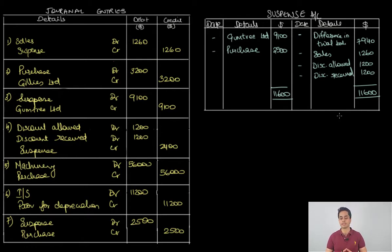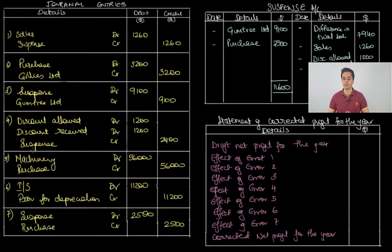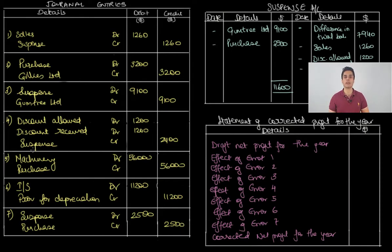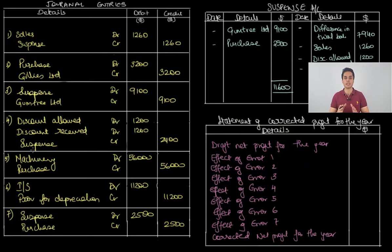Let's go to part C, where we calculate the corrected net profit for the year. We have the format for calculation of corrected profit. We analyze the journal entries and see their effect on profit: if a correction entry affects the income statement or an account eventually transferred to it, it impacts profit. If it only involves balance sheet accounts such as debtors, creditors, or non-current assets, it has no impact on profit.